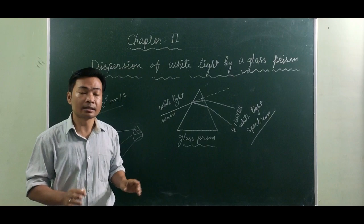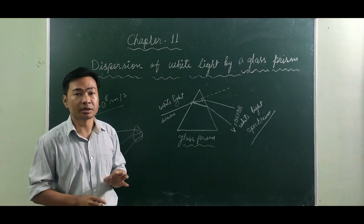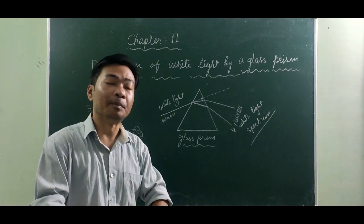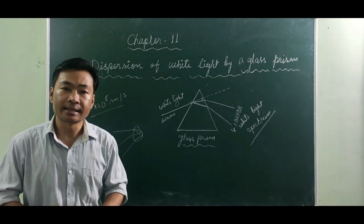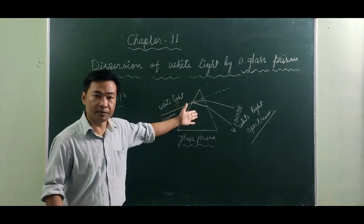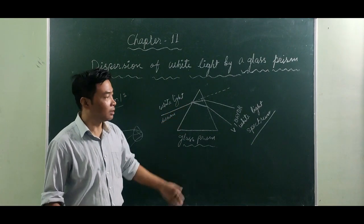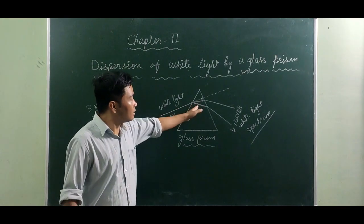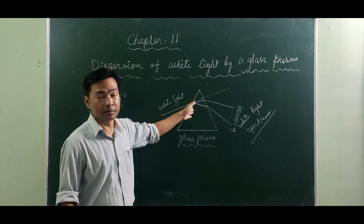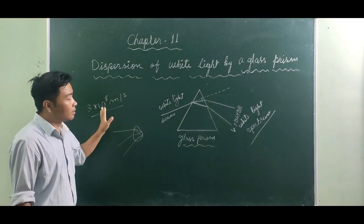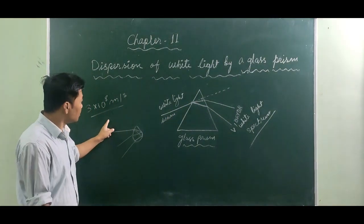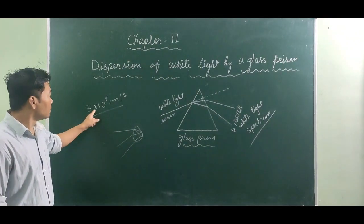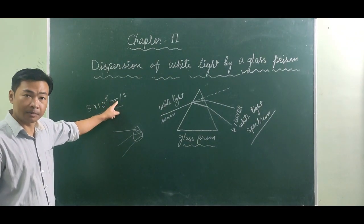As we know, white light is the constituent of seven different colors. But actually, white light is the constituent of millions of colors - to make it simple we take it as seven different colors. Now the question is: why does a light ray split into seven different colors? The reason is that light travels in air and vacuum with a constant speed of 3 × 10⁸ meters per second.